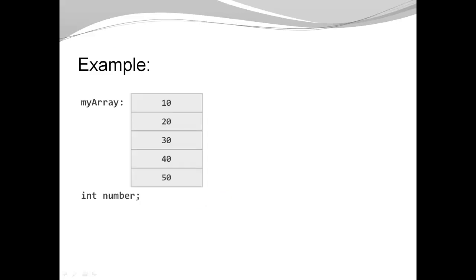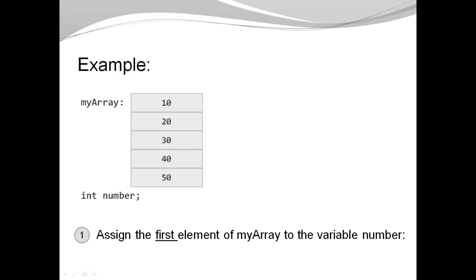Now it's a good time to have some examples. We're going to use the same array as before and an integer variable called number. The first challenge: assign the first element of myArray to the variable number. This is a reading situation, so my array access expression goes on the right side of the assignment. The index of the first element is zero. The complete statement is: number = myArray[0].